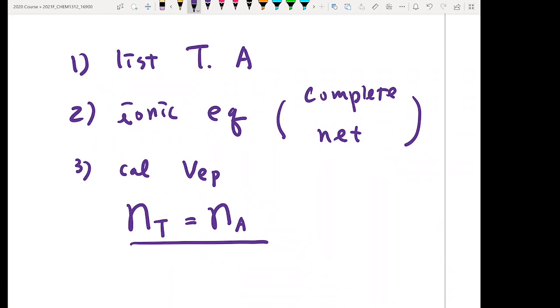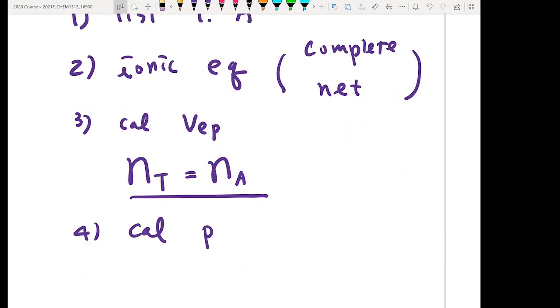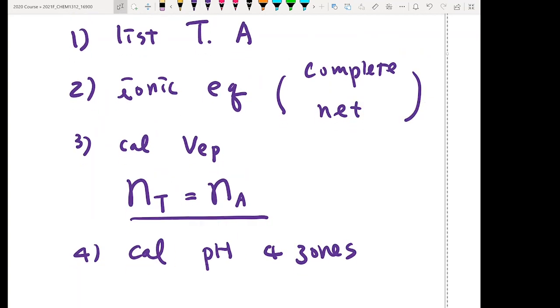And the very last one is calculate the pH at four zones. So that will be actually the four steps we are going to use for all the questions in this chapter.